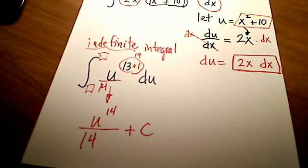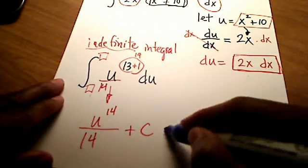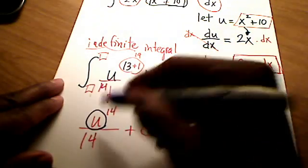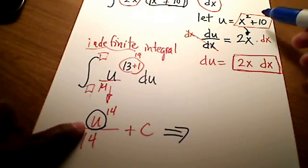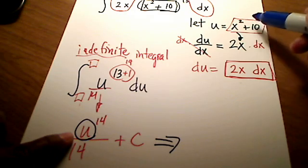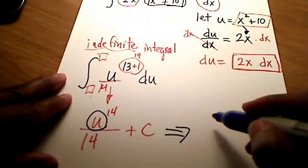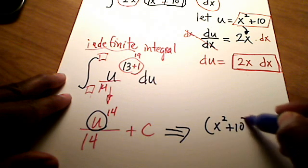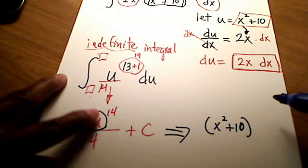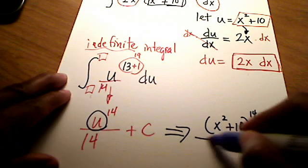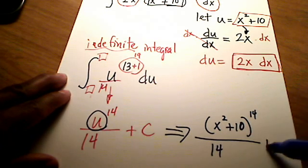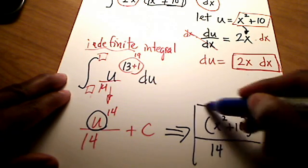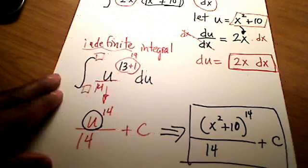So there's one more thing we have to do to finish off this problem, and that is, let's put back in place of u, let's put what u is actually equal to. It's actually equal to x squared plus 10. So my final answer is going to be x squared plus 10, right? This quantity is raised to the 14th power, all over 14, plus some constant C. And there is my final answer.